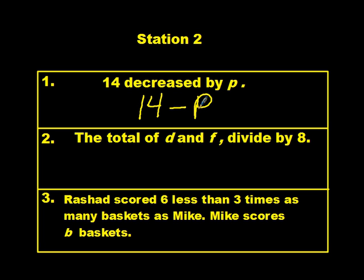Number two, the total of d and f divided by eight. Pause the video. Number three, Rashad scored six less than three times as many baskets as Mike. Mike scores b baskets. A little wordy, but think about it, and pause the video, and come back when you're ready. So the answer for three is three b minus six.